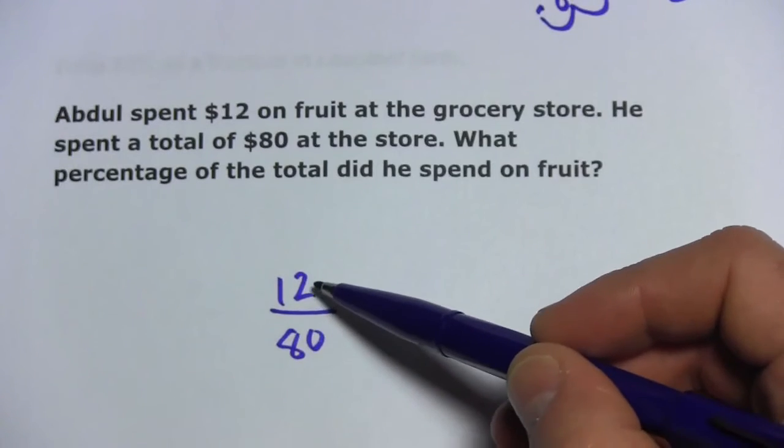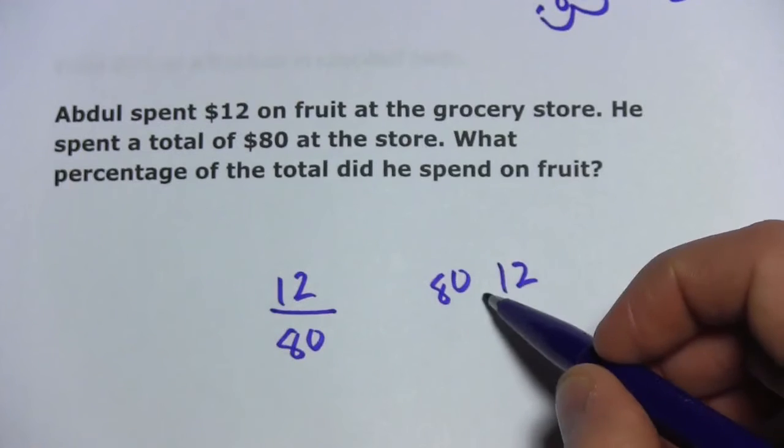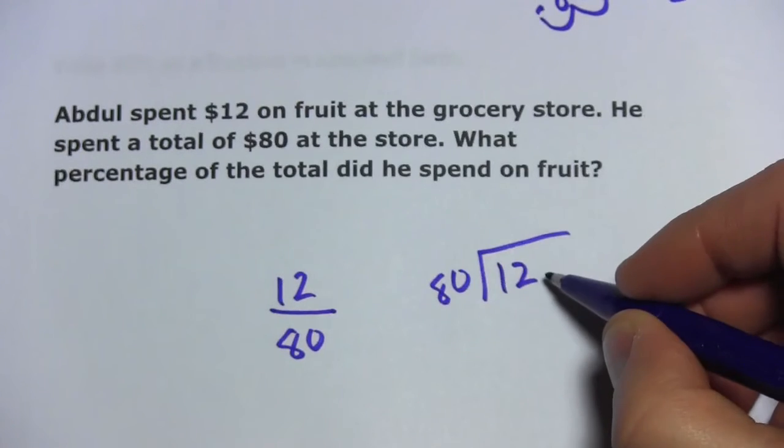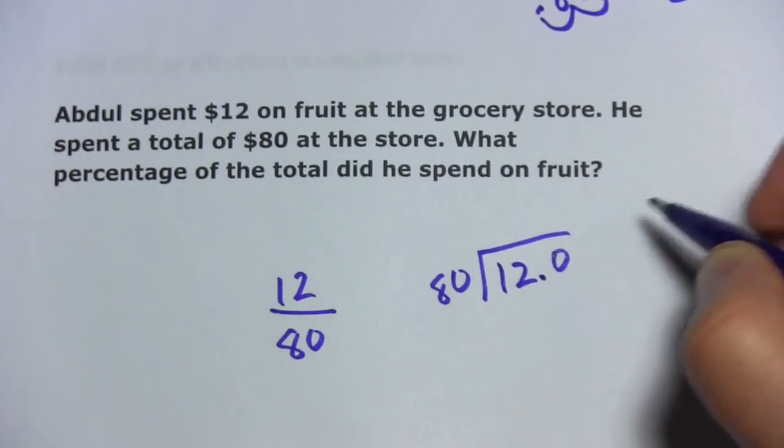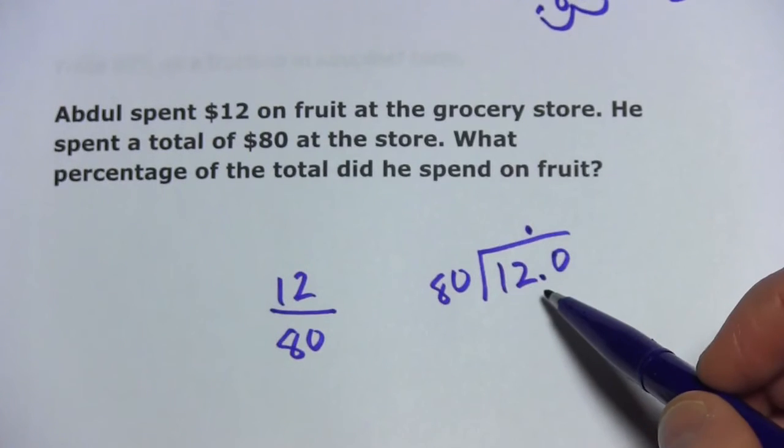The next step is to do the division. This is 12 divided by 80. Again, 80 is bigger than 12. So I'm going to put a decimal point here and a zero here. Put the decimal point up here.